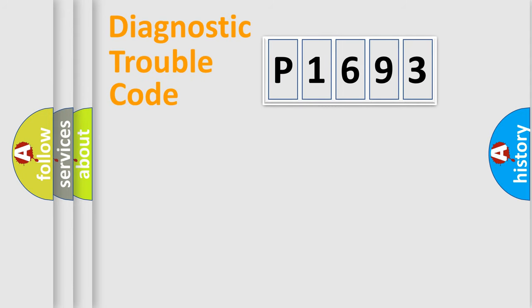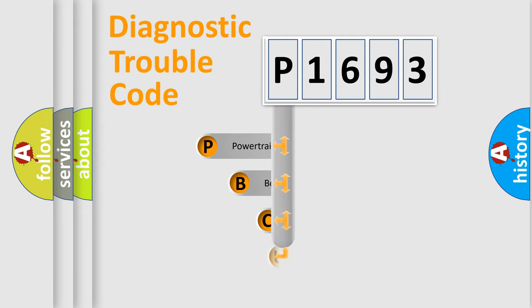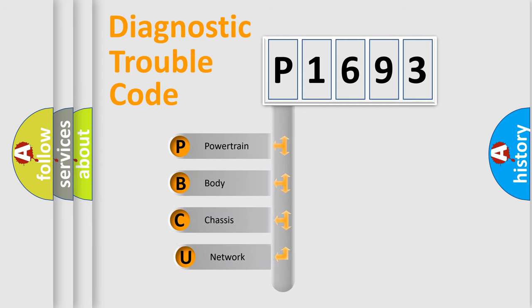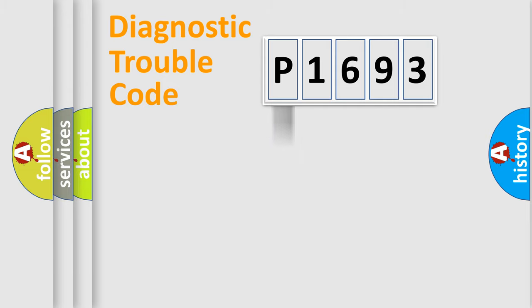Let's do this. First, let's look at the history of diagnostic fault code composition according to the OBD2 protocol, which is unified for all automakers since 2000. We divide the electrical system of the automobile into four basic units: Powertrain, Body, Chassis, and Network.